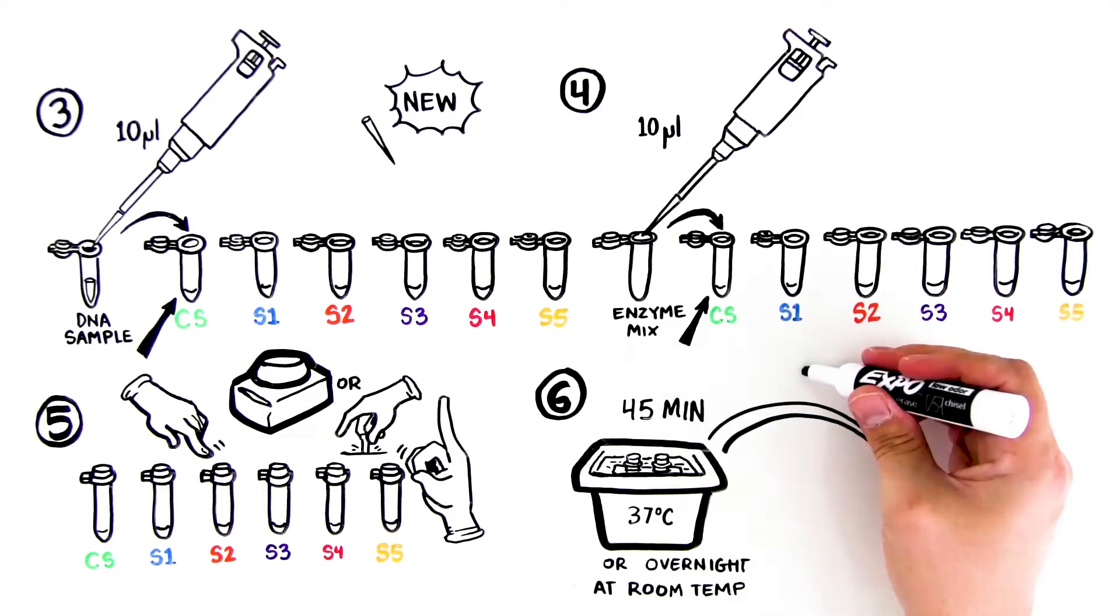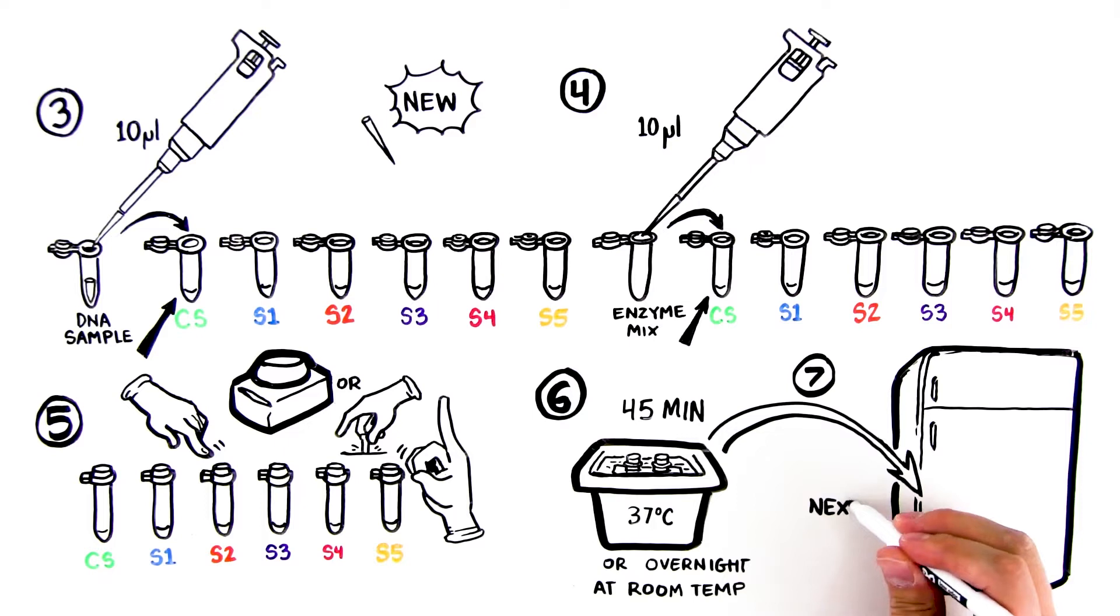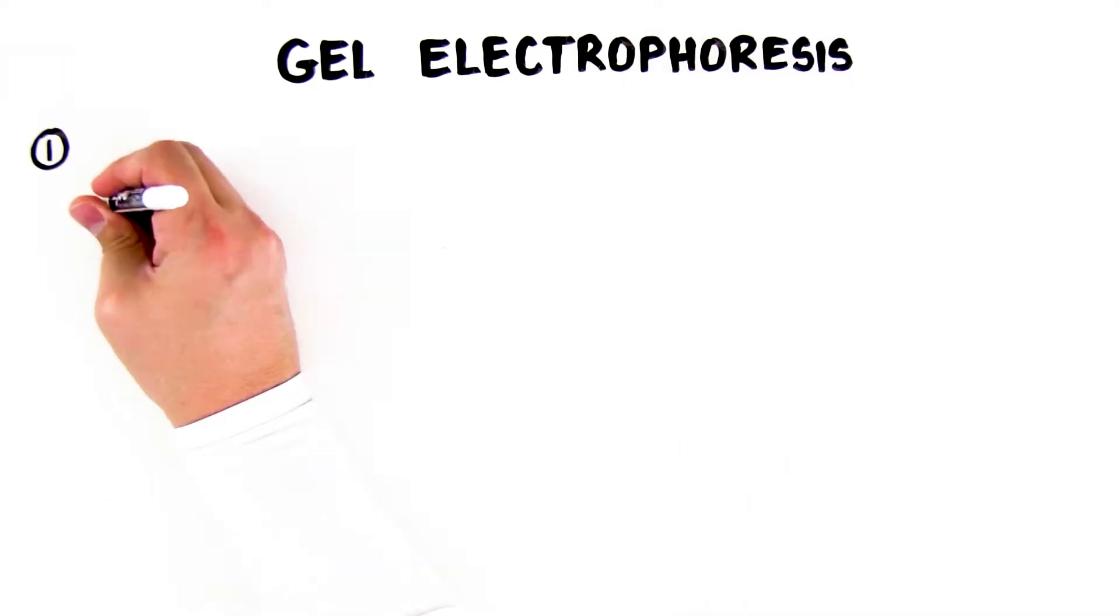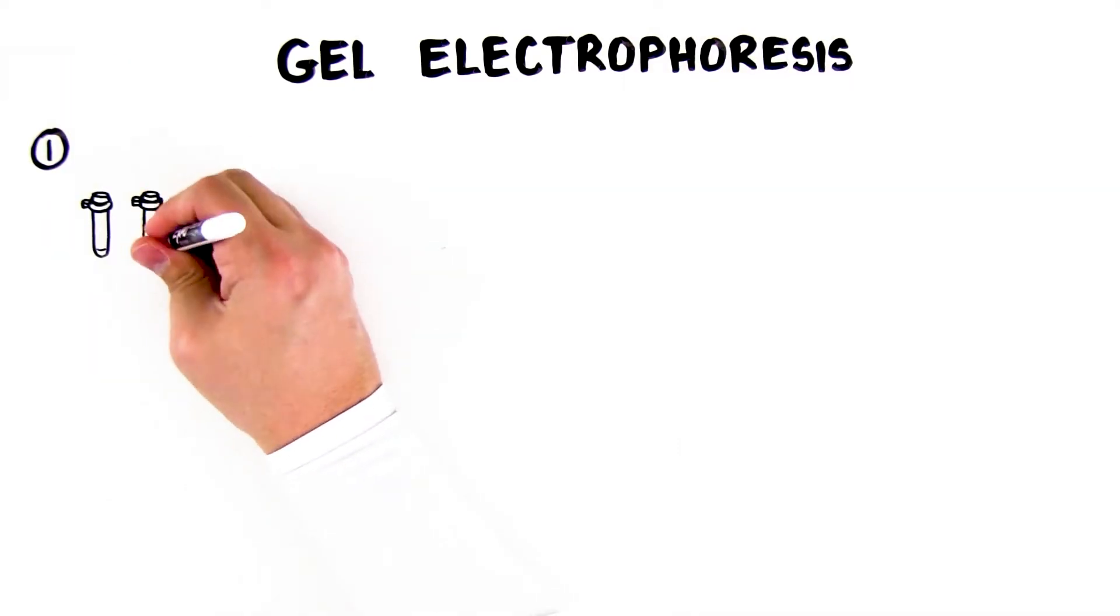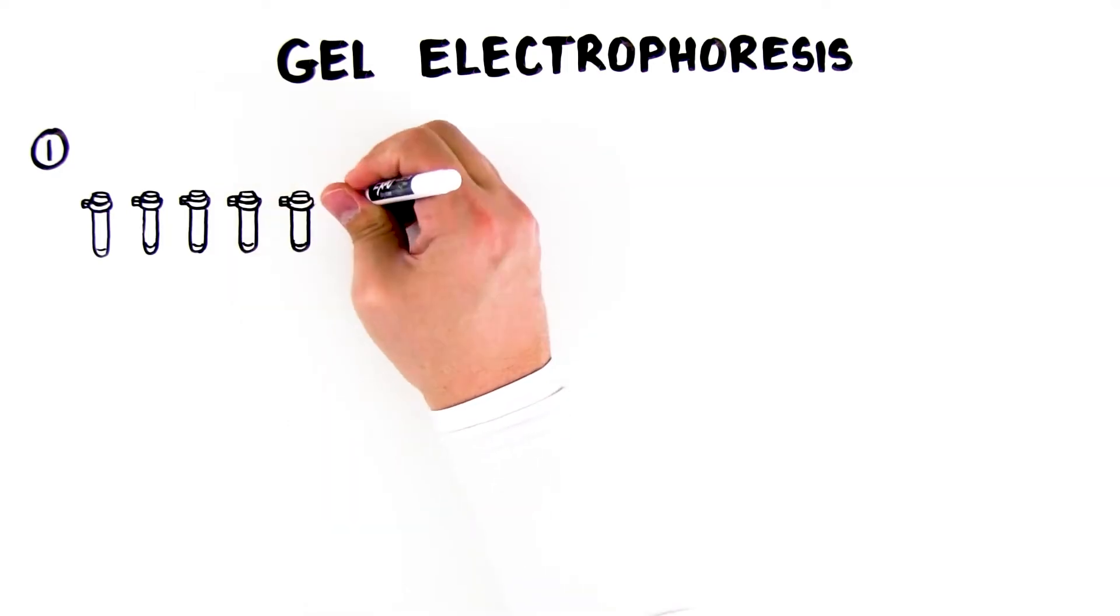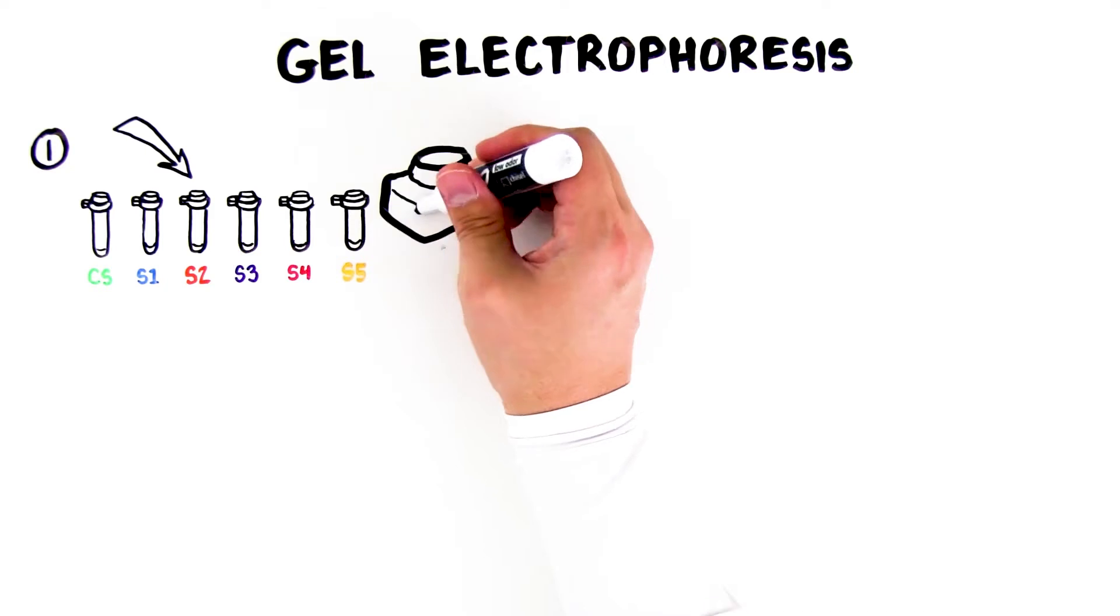Seventh, after the incubation period, remove the tubes from the water bath and place in the refrigerator until the next laboratory period. Day 2. Gel electrophoresis. First, remove your digested DNA samples from the refrigerator. If a centrifuge is available, pulse spin the tubes in the centrifuge to bring all of the liquid into the bottom of the tube.